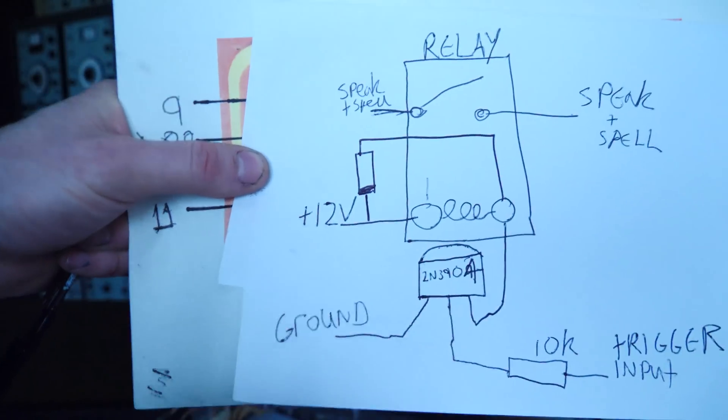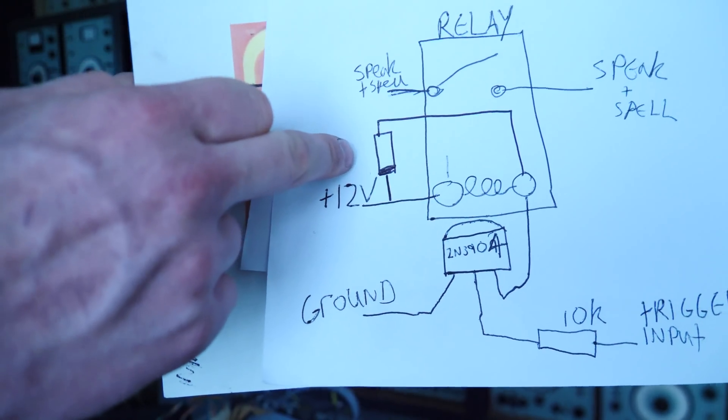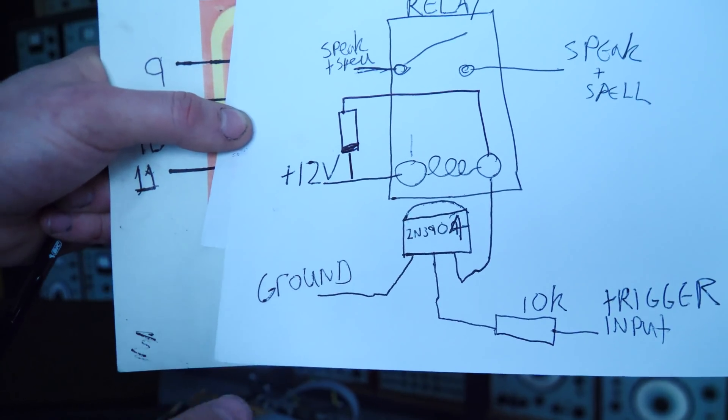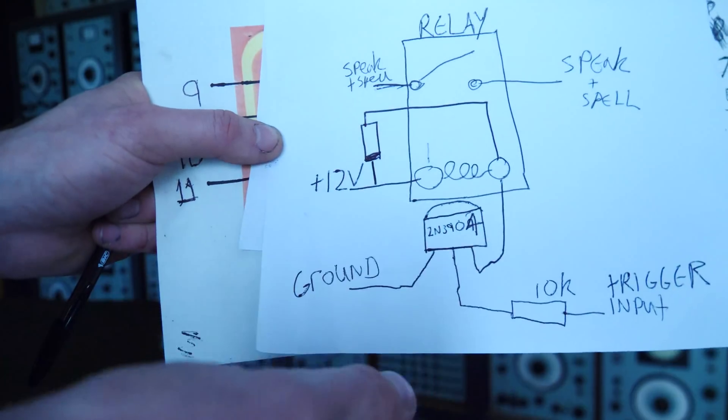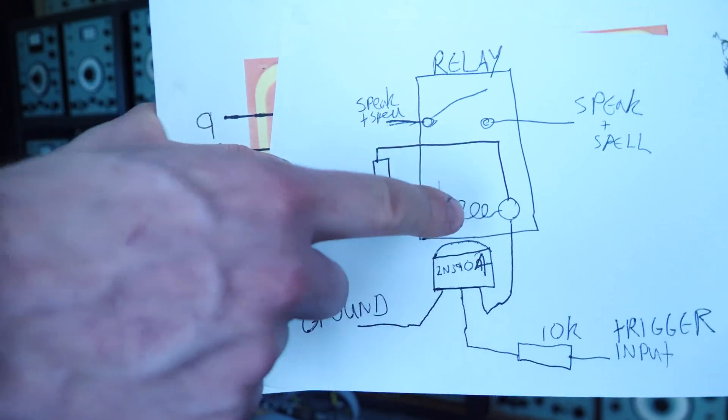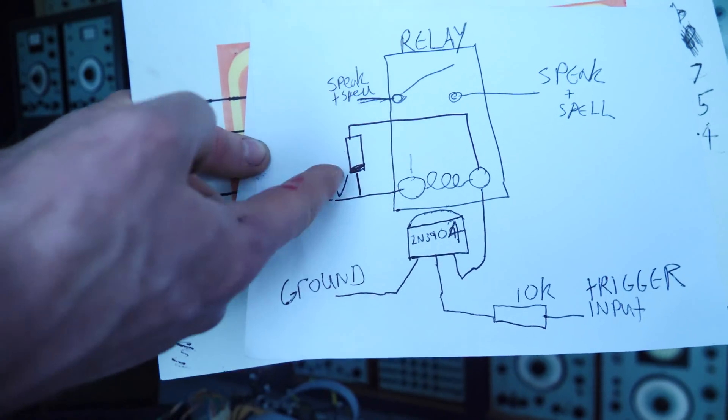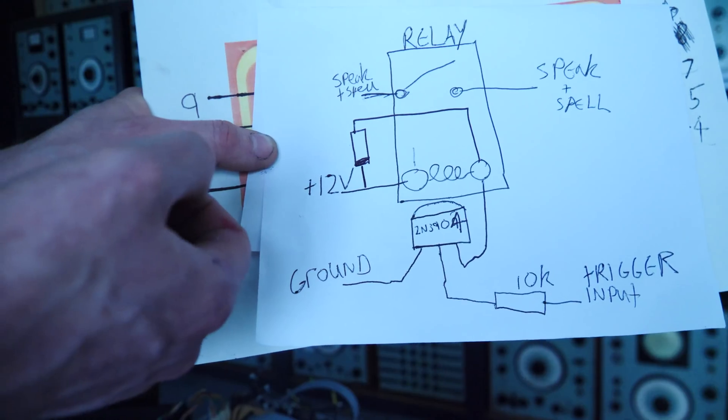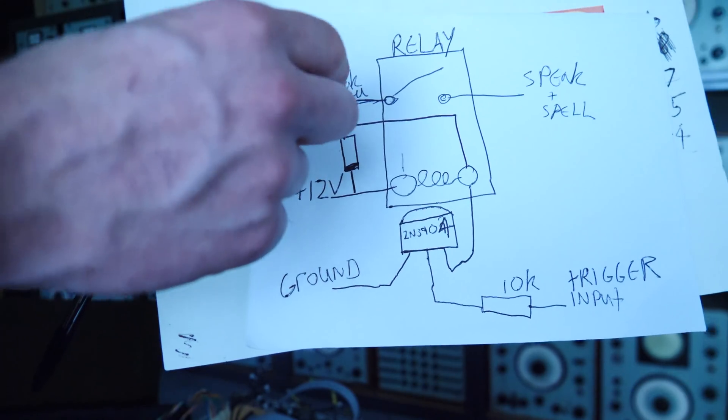This is the image from the other video. Basically it's just a 2N3904, the trigger input goes into it and it sends this pin of the relay to ground, and then this pin is wired up to 12 volts. And then these are the two Speak and Spell pins, so you would solder pin 8 to that and pin 13 to that. A lot of people have commented about flyback protection and stuff and adding a diode between, so the black lines there of the diode, you can use like a 1N4004 diode or something like that, and you put that there to stop very quick high voltage surges which could blow up the transistor.